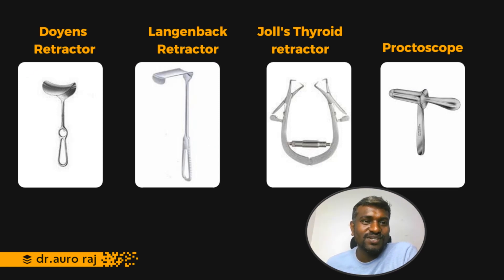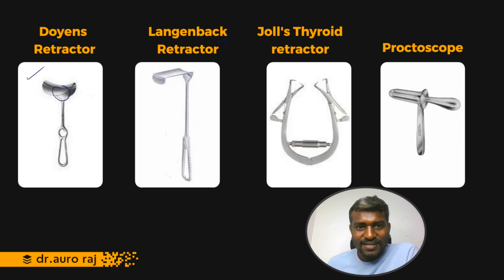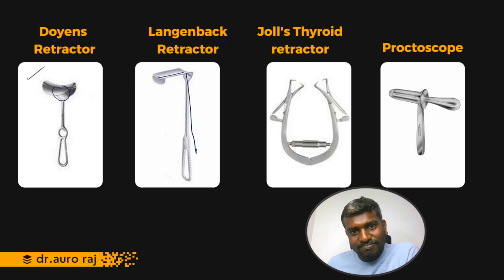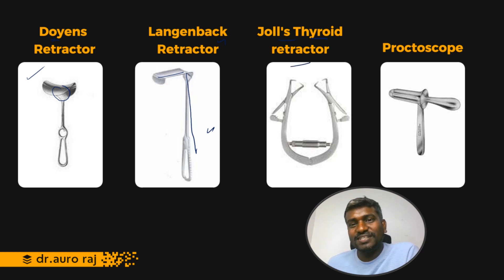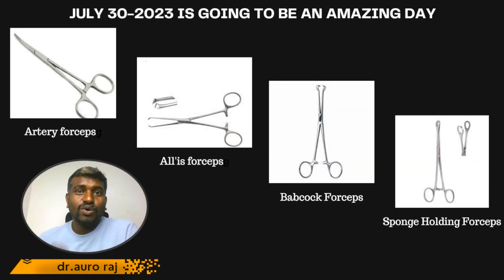Now the important surgical instruments. The first is Doyen's retractor — remember Doyen's looks somewhat like the letter O. Next is Langenbeck's retractor — it looks like the letter L in shape. The third is Joell's thyroid retractor, and the last one is a proctoscope.